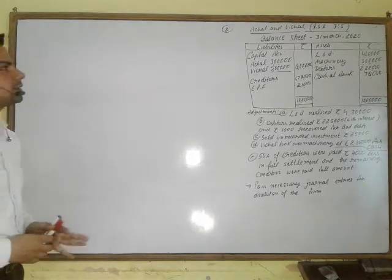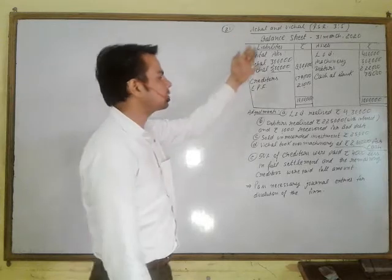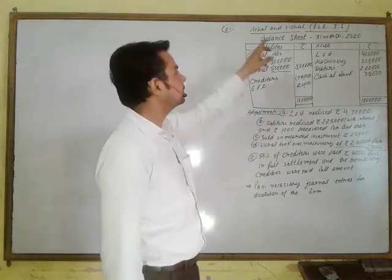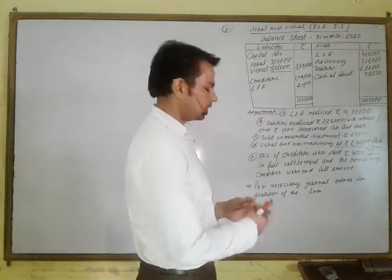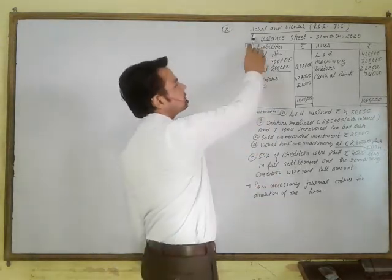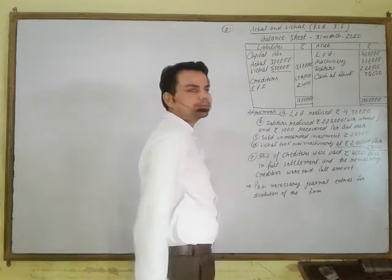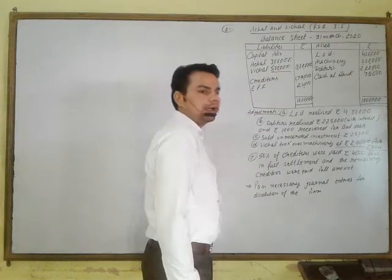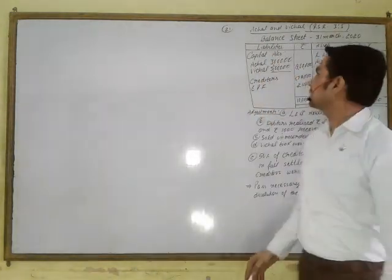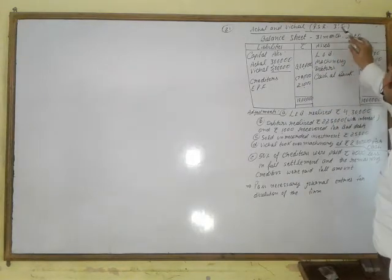Dear students, in very short, I have written the question here. In this question, we can see that there are two partners, Anchal and Bichal, and they are sharing profits and losses in the ratio three to five.